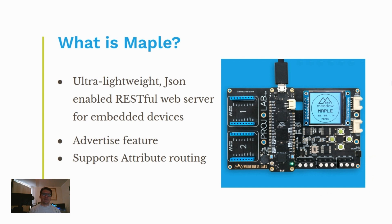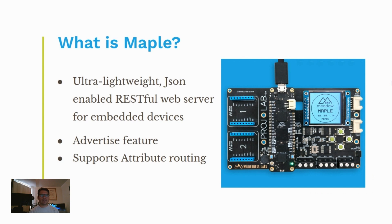MAPLE comes with an ESP32 coprocessor built-in that enables Bluetooth and Wi-Fi capabilities. In this talk I want to show you a way to control MAPLE by turning it into a lightweight RESTful web server. This lets you connect over Wi-Fi and use a browser to do HTTP requests to control your device, get data, or send data to it.